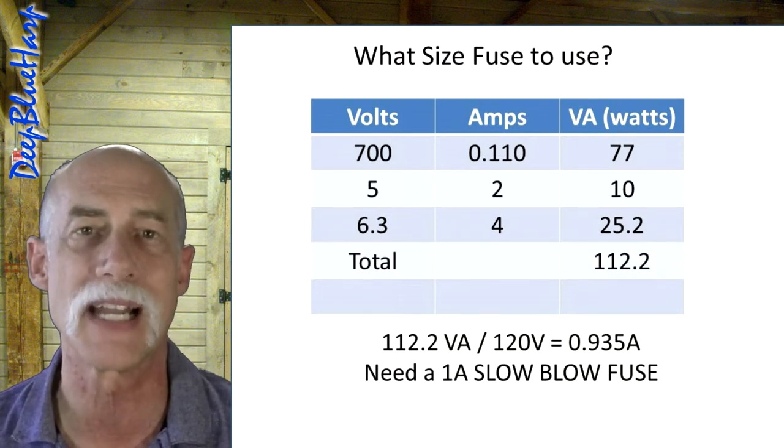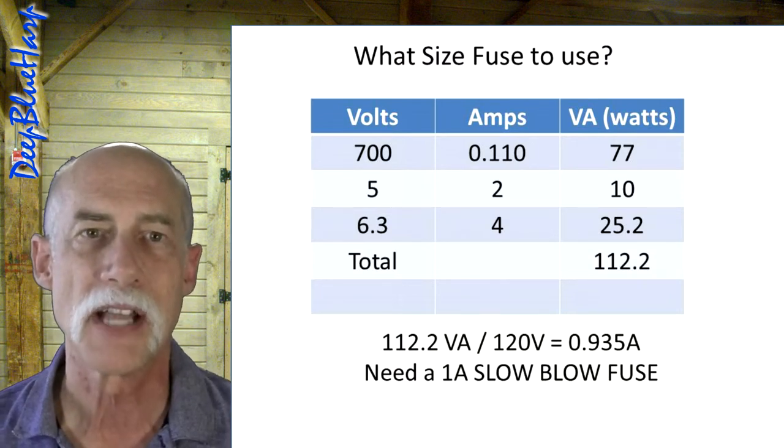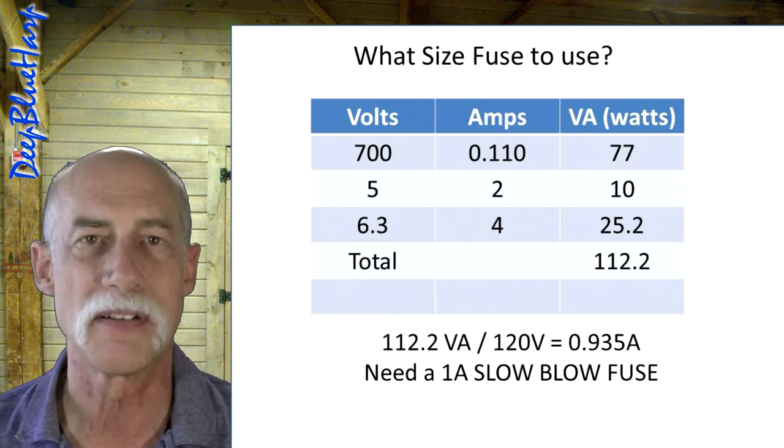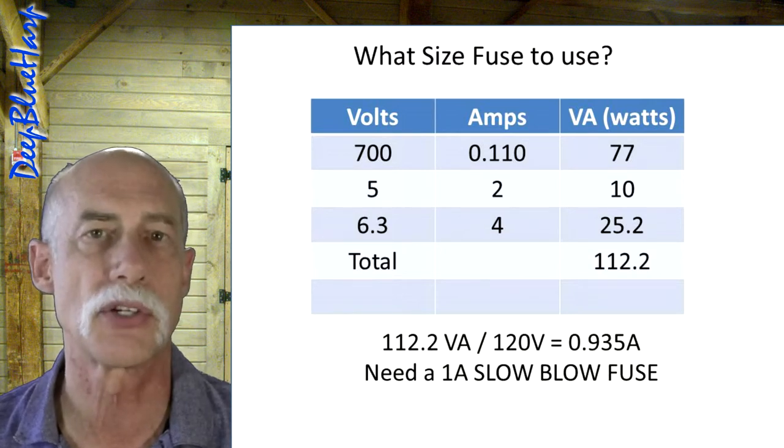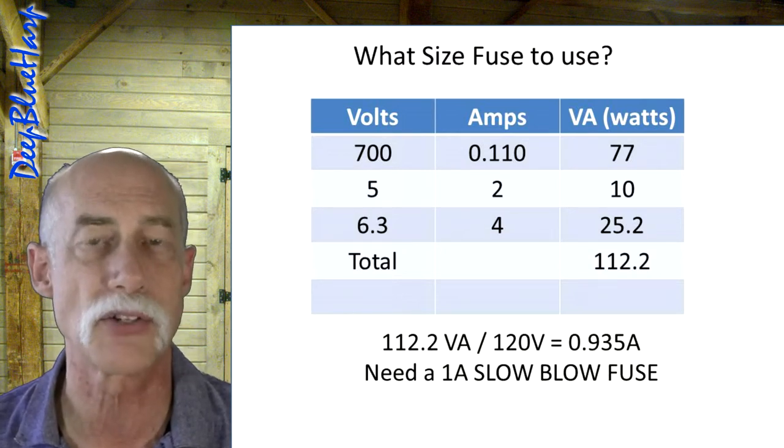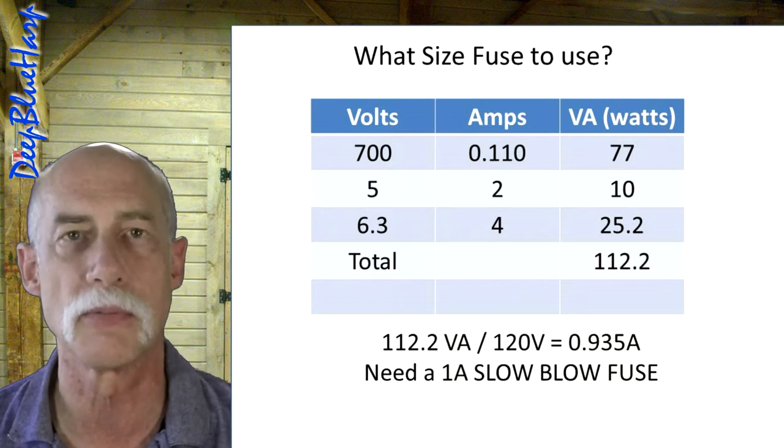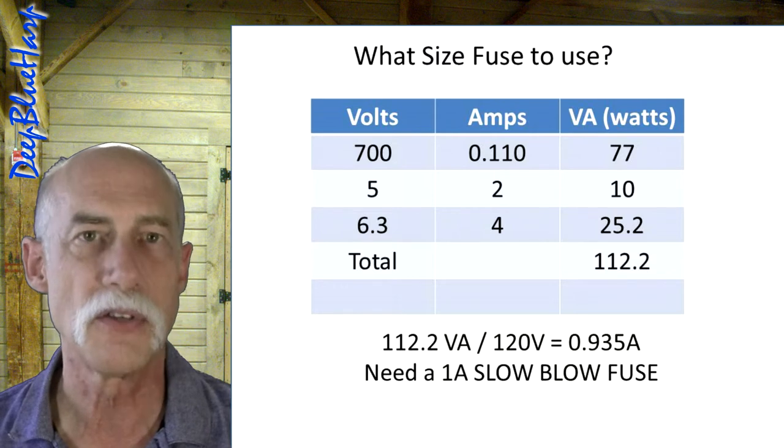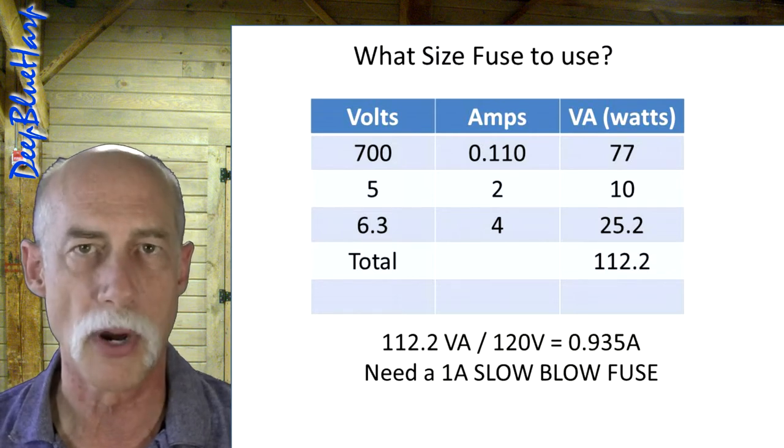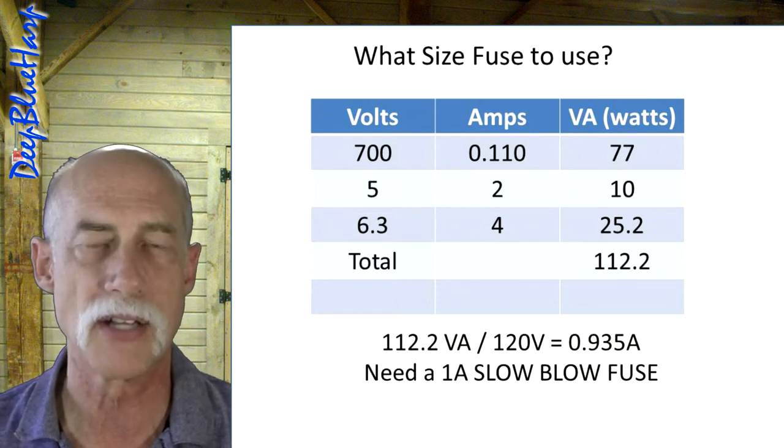Basically, what would happen is you're connecting your 700V center tap, or half that, 350V, is going directly to ground. In which case, you're creating a short and you'll notice a flash or a blue arc show up in the vacuum tube rectifier. If you have the correct size fuse in there, it should just break and everything will be okay after that. Just don't do that very often.